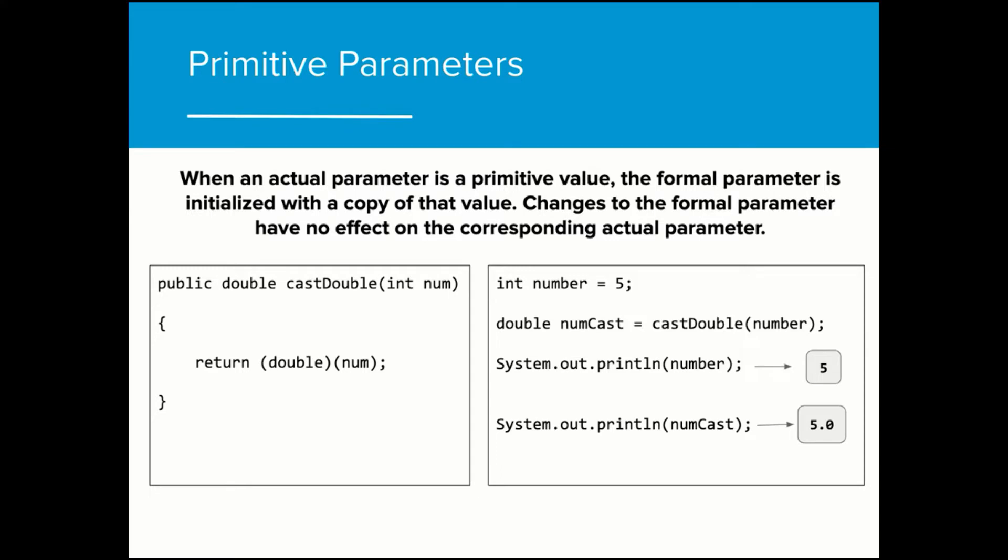When an actual parameter is a primitive value, the formal parameter is initialized with a copy of that value. Any changes that are made to the formal parameter have no effect on the actual parameter. In this case, int number on the right is initialized to the value five. When cast double is called on number, int num is initialized with the value of number, which is five, and returned to the program to be initialized in the variable numcast. We see that the initial value of number is unchanged, even after cast double is called on number, because a copy of the value is passed to the method, not the actual variable number.